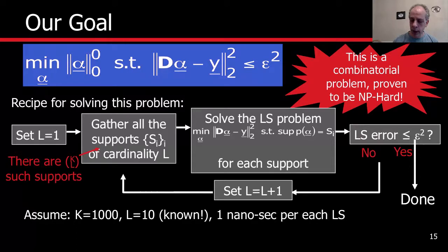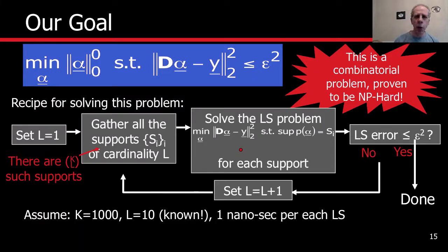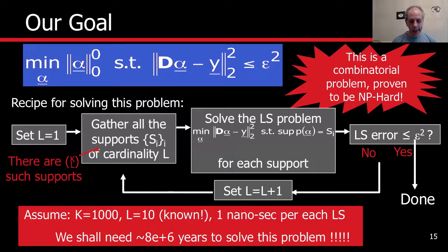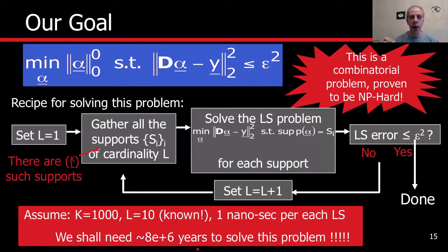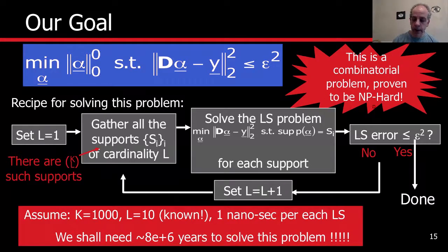Assume each computation takes about one nanosecond. You try all possible supports of size 10 and solve each problem in one nanosecond. What you get is that you would need an extremely long time to solve this problem — it's a huge number. That's already just for L equal to 10. Imagine running over all possible Ls. It's impossible. That's why the problem is NP-hard.